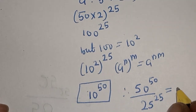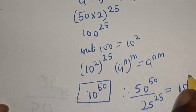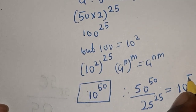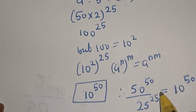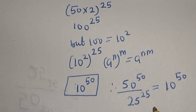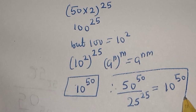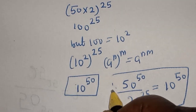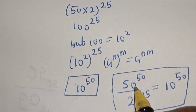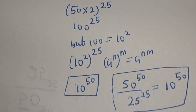Therefore, 50 raised to power 50 divided by 25 raised to power 25 is equal to 10 raised to power 50. Before you leave, like, share, comment and subscribe. See you in the next video, thank you, bye bye.